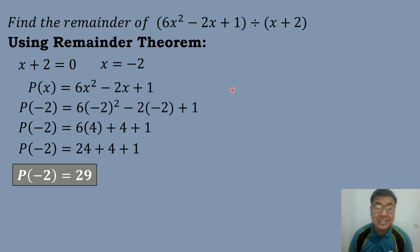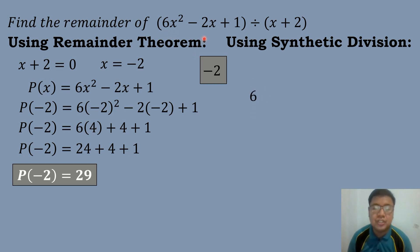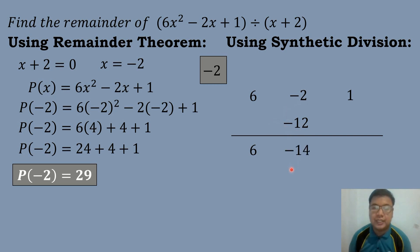Now the other method is to use synthetic division to get the remainder. We will equate the divisor by 0: X plus 2 equals 0, so X equals negative 2. We get the numerical coefficients of the dividend: the quadratic term is 6, the linear term is negative 2, and the constant term is 1. Draw a line and bring down 6. Then 6 times negative 2 equals negative 12; negative 2 plus negative 12 equals negative 14. Then negative 14 times negative 2 equals positive 28; and 1 plus 28 equals 29.